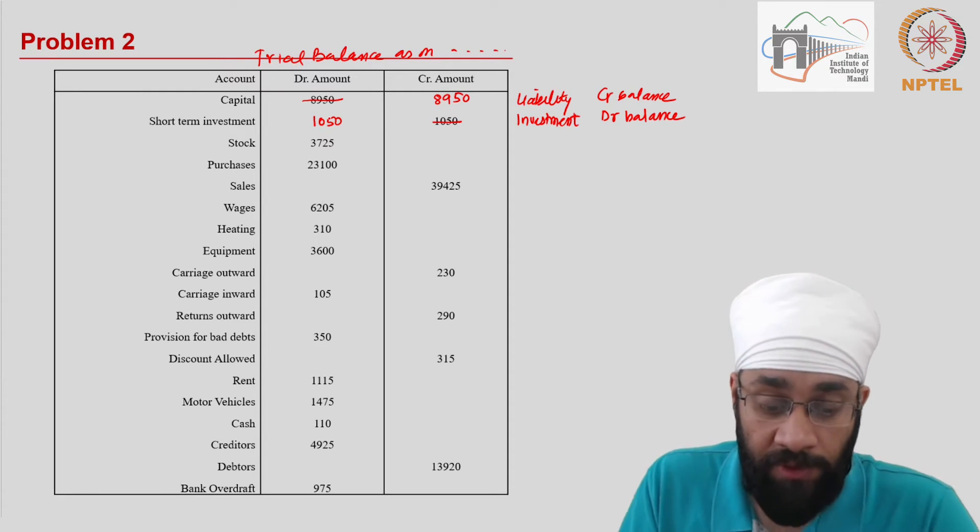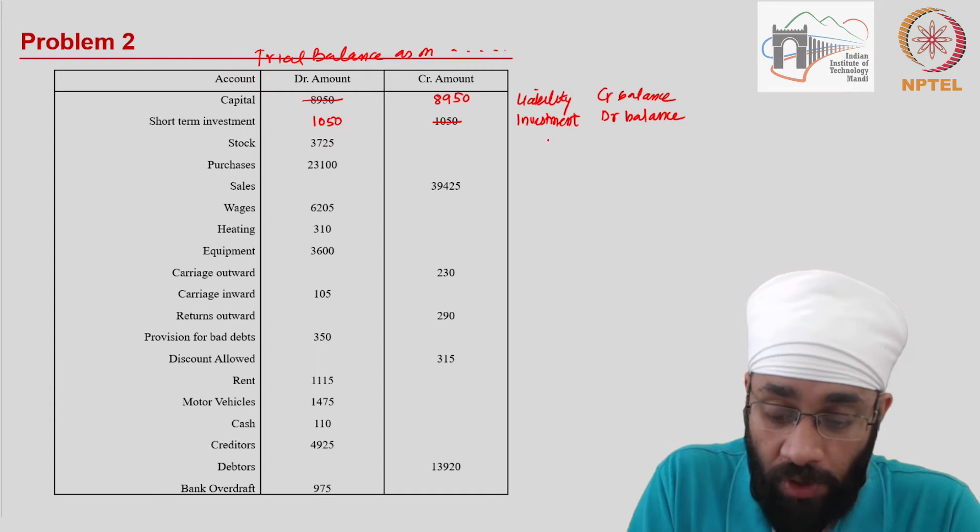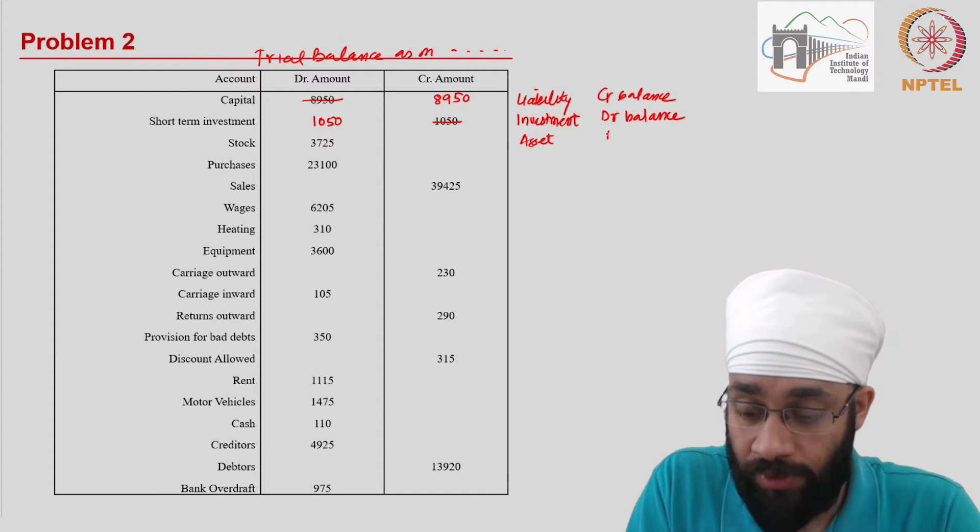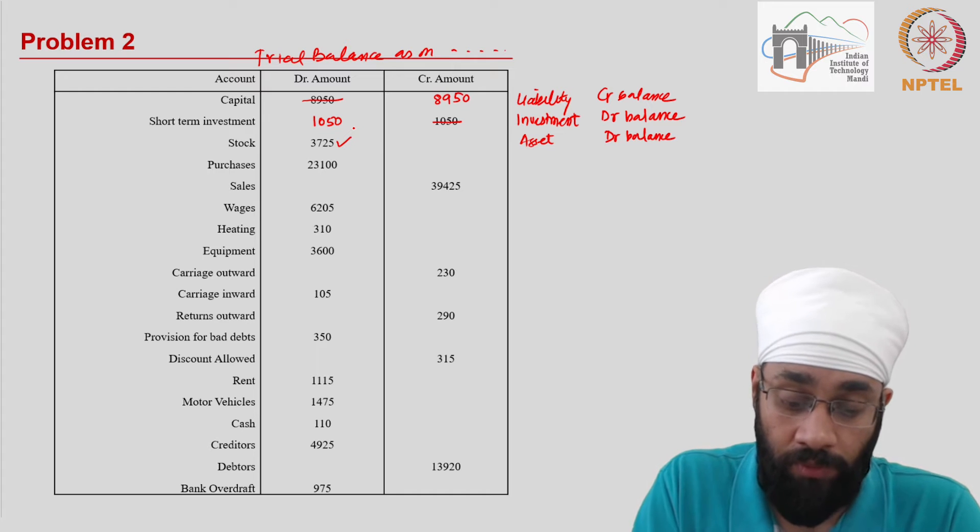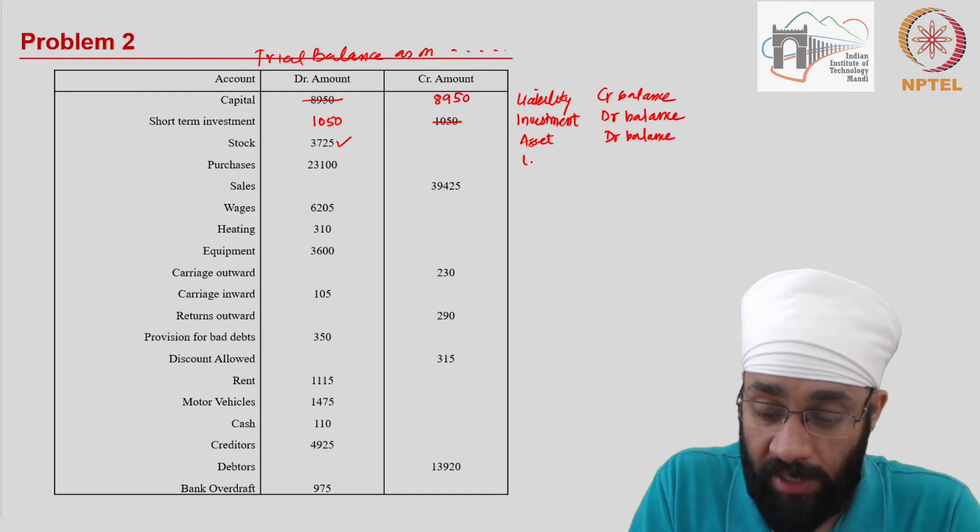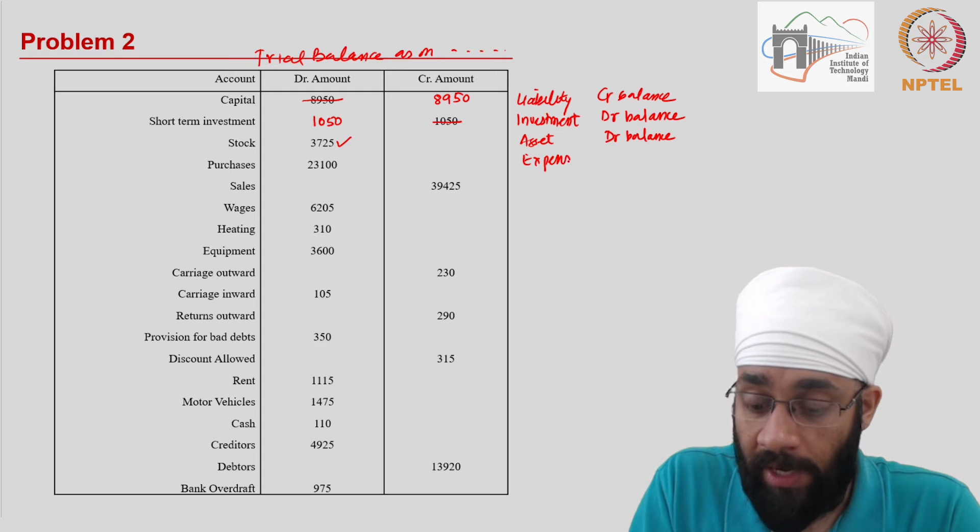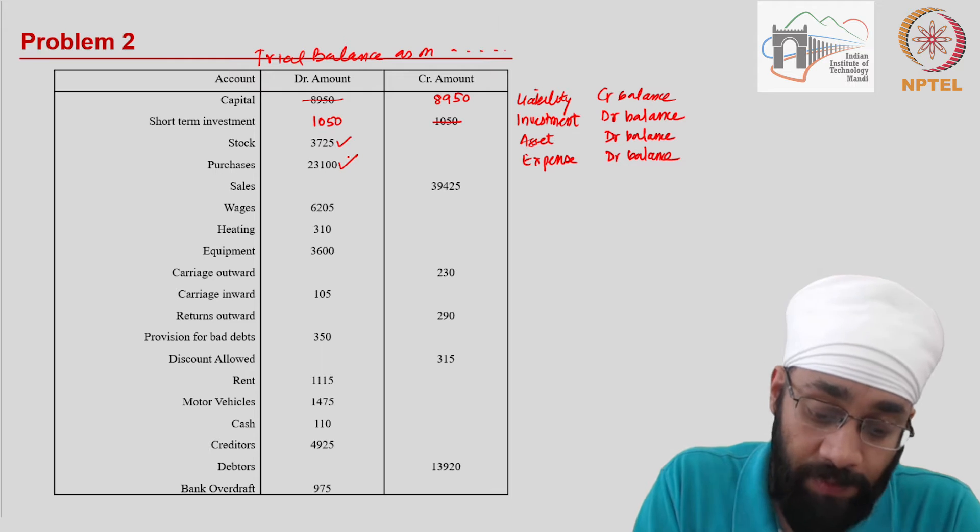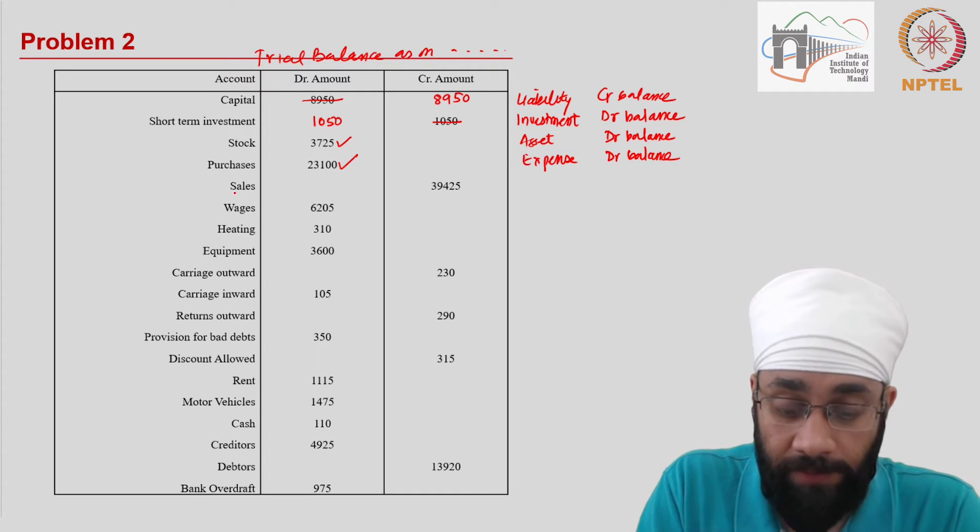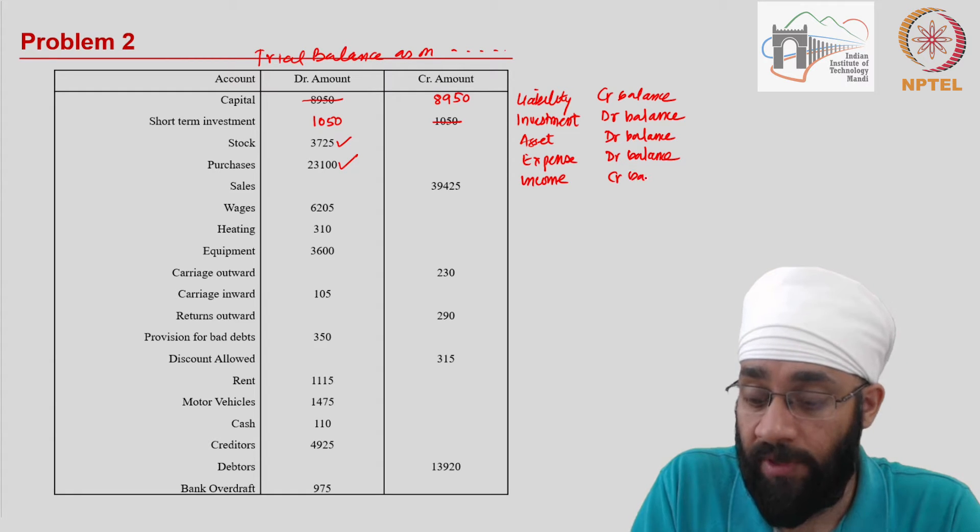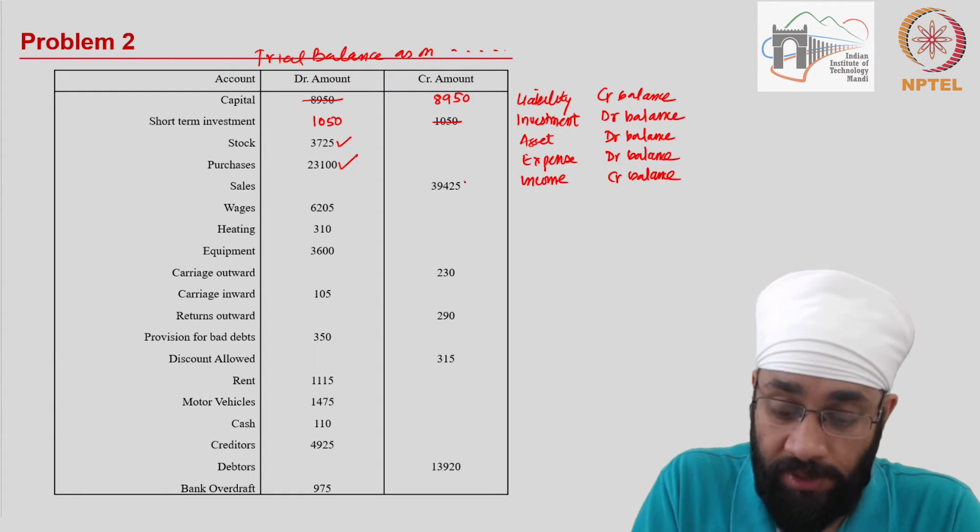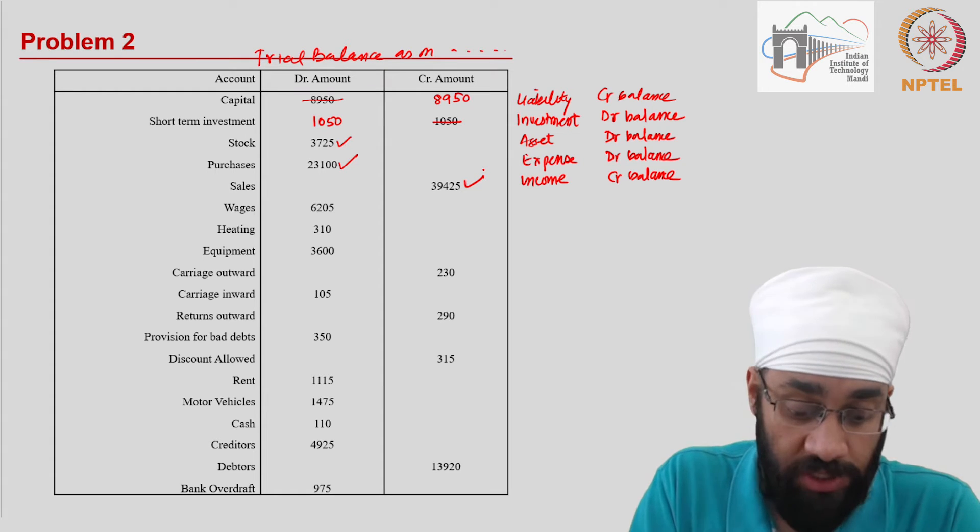Next up is stock. Stock is an asset—unsold stock. This should have a debit balance. This is already on the debit column, so we don't need to worry about it. This is fine. Purchases are expenses, and all expenses have debit balance. The balance has been written in the debit column, so this is correct. Sales is income. It is written on the credit side, so we don't need to change anything.